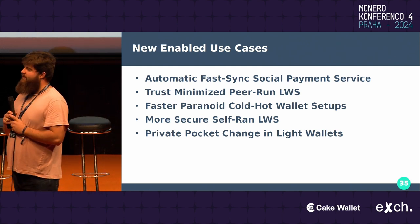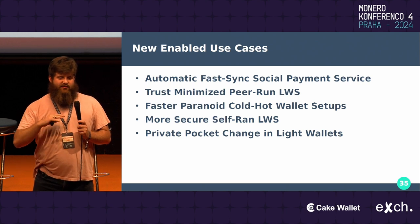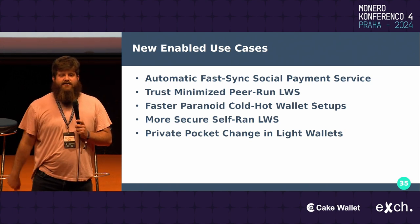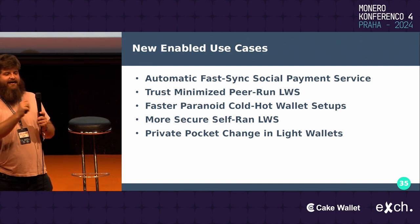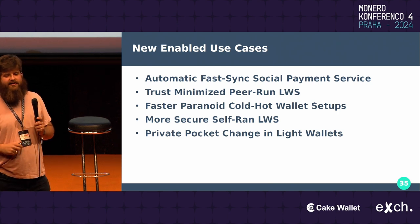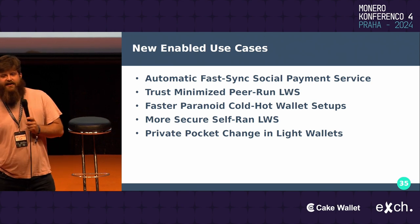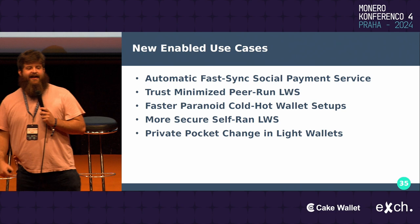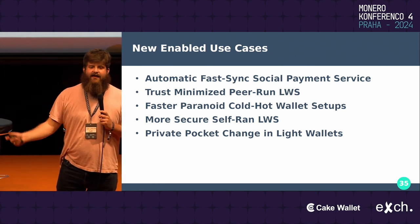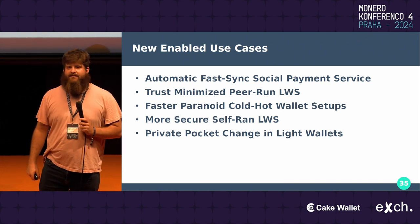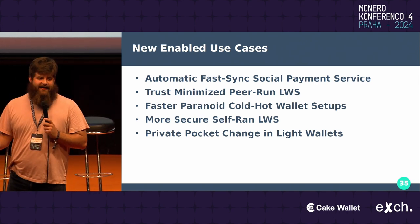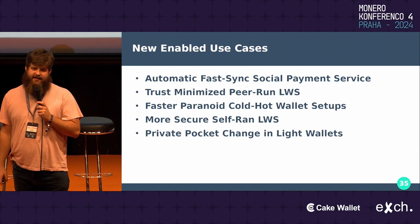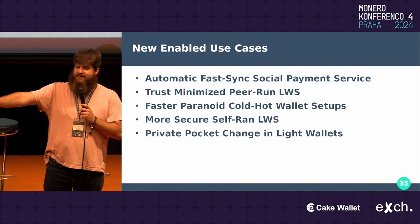Enabled use cases: now that you can let people generate addresses on your behalf, one thing you could do is make a Venmo-like service where the service generates addresses for you. So if I want to pay Luke, for example, I don't have to interact with him — it generates a unique address for each individual person, completely non-interactively, and that can be non-interactively verified. Peer-run LWS is also now a much easier sell — you can give someone the gift of fast syncing without telling them 'I can see all of your transaction data.' And for cold/hot wallet setups, if you want to be really paranoid, this will make those setups even more private than they are now.